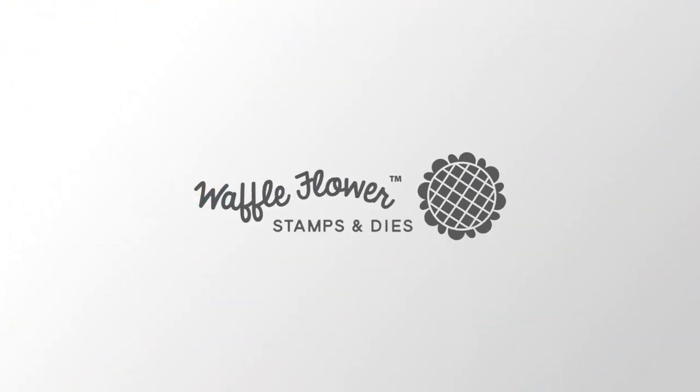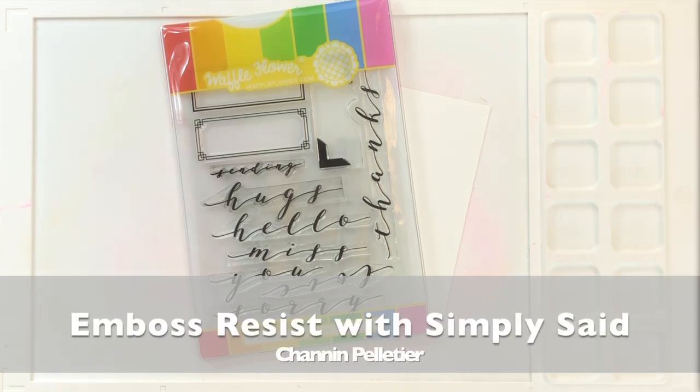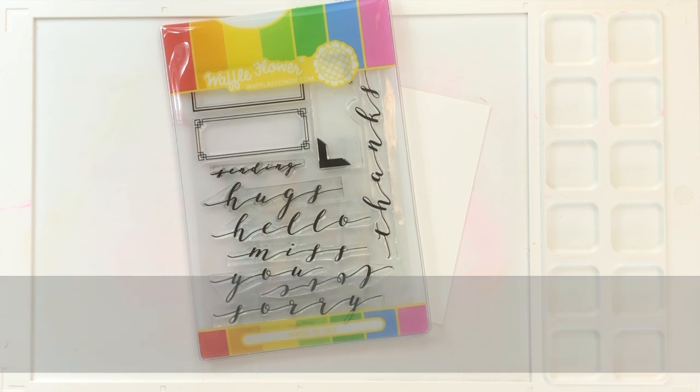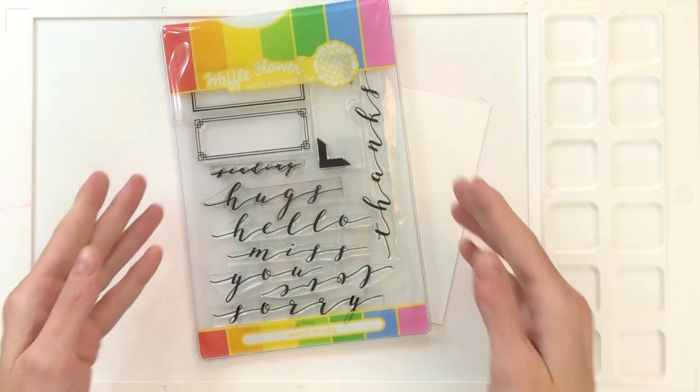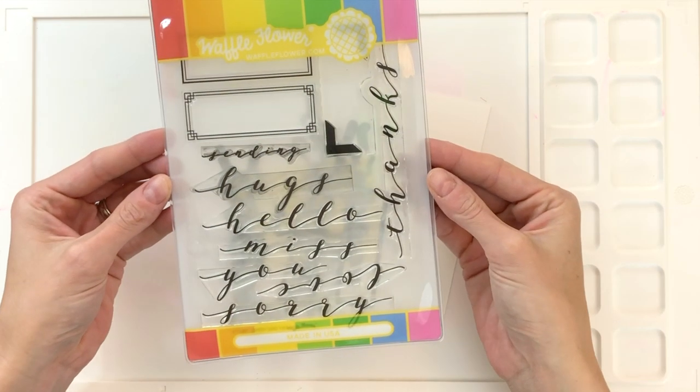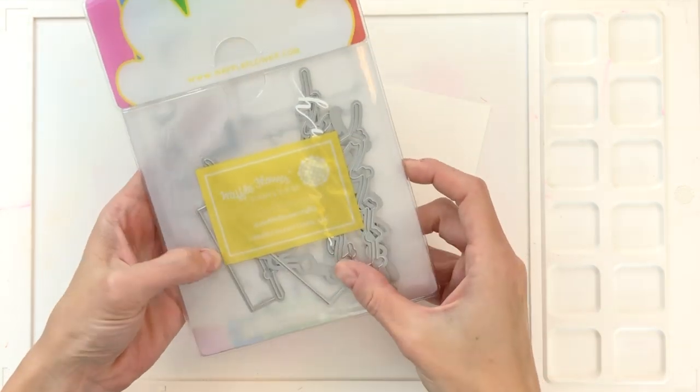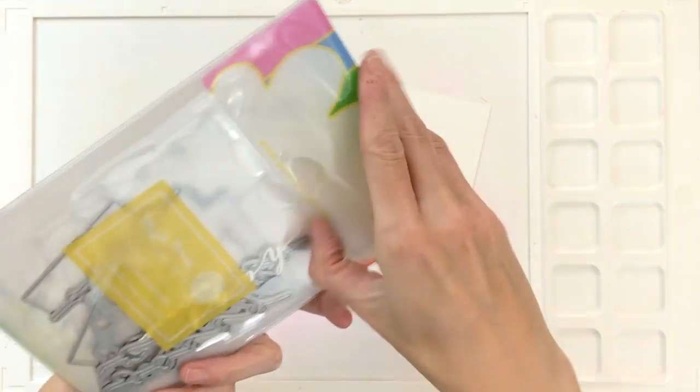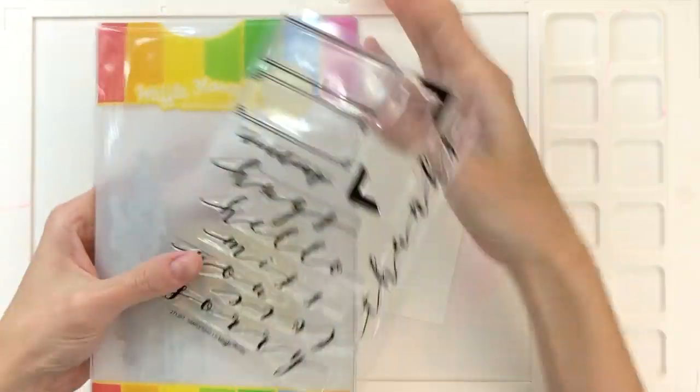Hello everyone, this is Shannon for Waffle Flower Crafts. In this video we're going to do some really simple watercoloring and combine it with emboss resist to create some colorful, beautiful backgrounds. Today we'll be using the Simply Said combo set by Waffle Flower Crafts. This awesome set comes with the dies in the back with this gorgeous sentiment stamp set in the front.